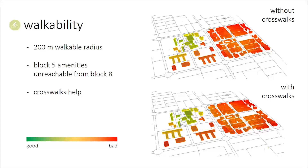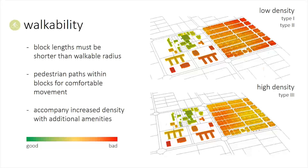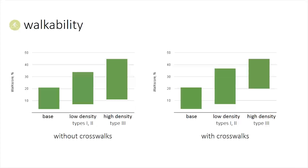Adding crosswalks over the main road within the neighborhood helps to improve the reachability of amenities. In our design intervention, we further improve walkability by adding paths and small parks within each of the small blocks in Block 8. To reflect our high-rise typology, we also experiment with increasing the density of the neighborhood and quadrupling the number of amenities in the residential blocks. These plots show the range of walk scores found within each neighborhood in each case tested. The best walk scores are created with a high-density neighborhood that includes crosswalks over the busy roads.